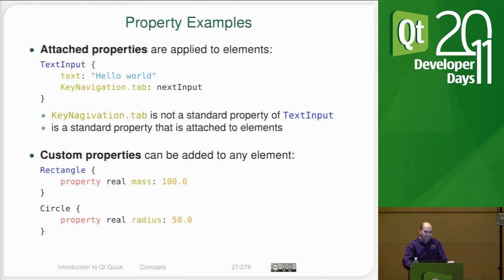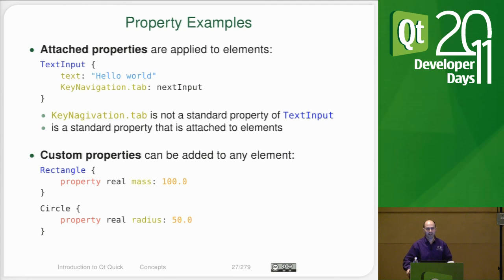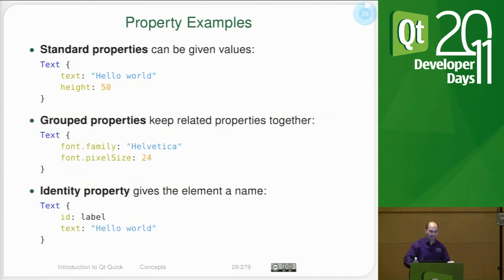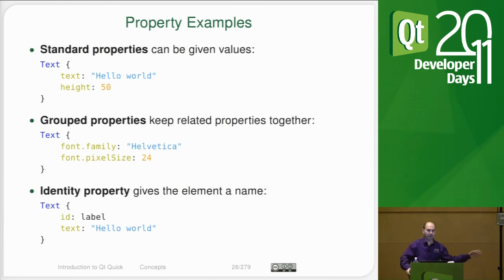The scope of the ID is actually pretty broad — within the file that you're in. Any of your child items that you make below you will also have access to that identifier. It uses the JavaScript lookup rules where it's going to first look for the identifier locally, then go up in the QML namespace and finally get to the global namespace. So once you set an identifier, that label is valid for the file that you're in. It is also valid if you made children of the text item — you could use the ID inside of there as well. So the scoping is very broad.